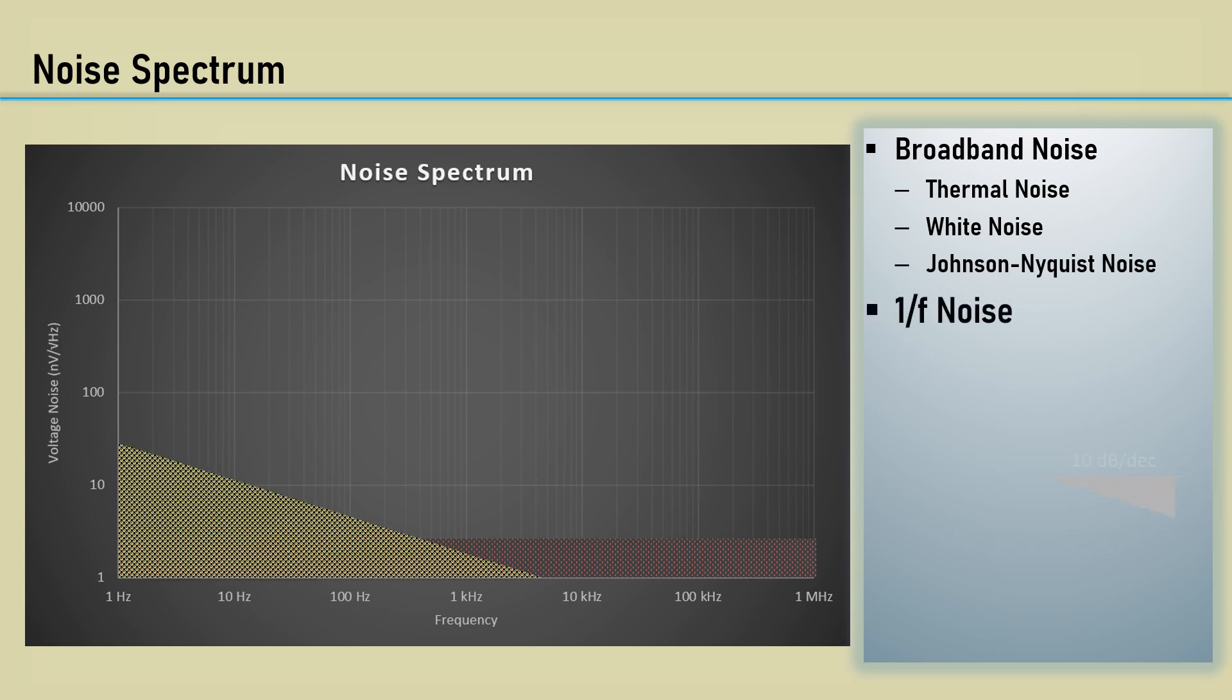1 over F noise has a 10 dB per decade slope. It's commonly called flicker noise, but it's also called pink noise, low-frequency noise, and excess noise.